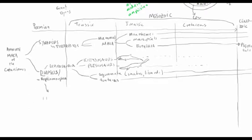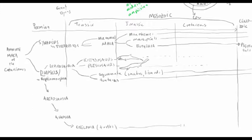Looking at the other group of diapsids, the Archosauria, some splitting occurs even before the Permian-Triassic boundary. There are some Permian turtles, which suggests the origin of the anapsida — so named because they've lost the hole at the back of their skull. The anapsids give rise ultimately to the chelonia (turtles), present all the way to today. Modern organisms include monotremes, marsupials, and placentals; ichthyosaurs and plesiosaurs have gone extinct; squamates and tuataras are still present; and there's lots of diversity within the chelonia.